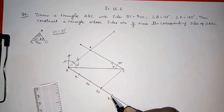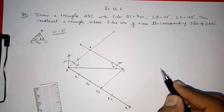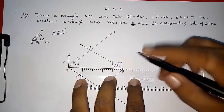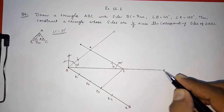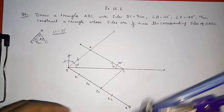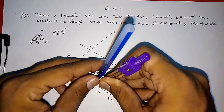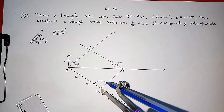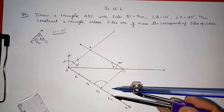Now I have to draw a line from B4 parallel to B3C. So I am going to extend BC as well. To construct parallel lines from B4, we need corresponding angles to be equal. So first I am going to draw an arc on B3C with the same measurement, and then draw an arc from B4 also.